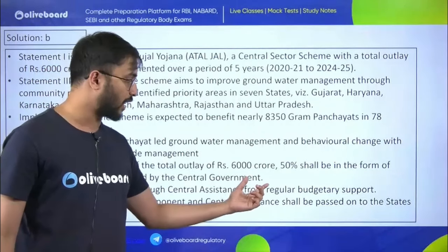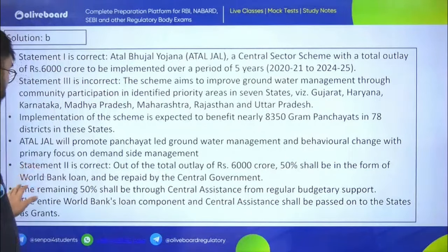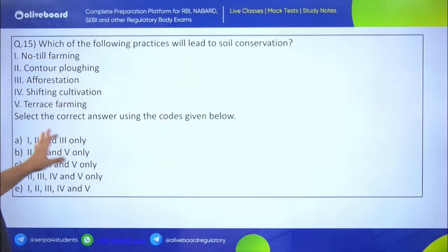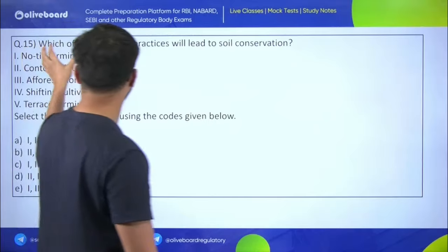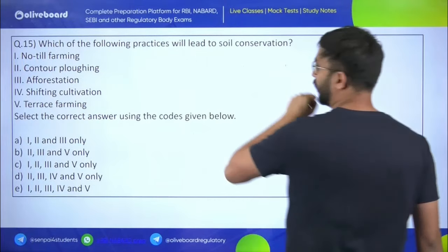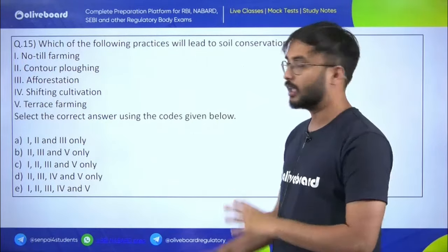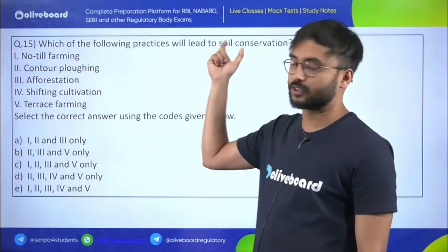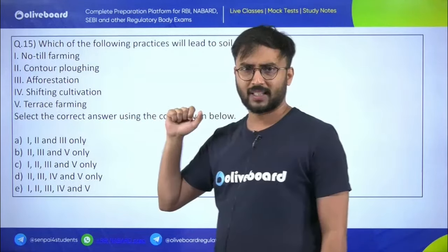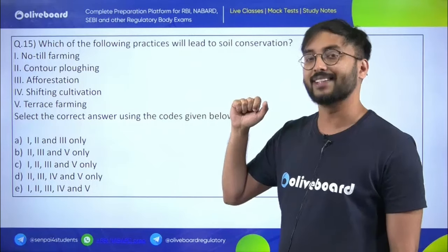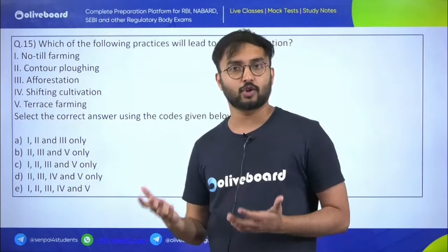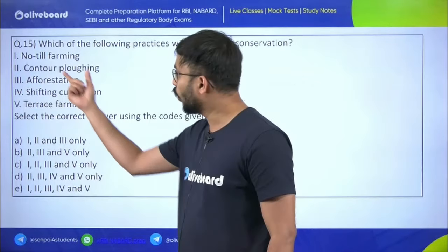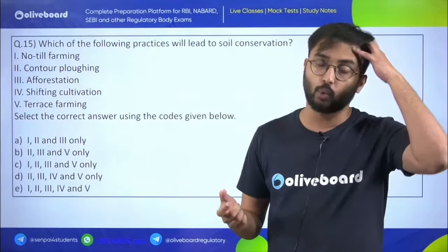Atal Bhujal Yojana statements: central sector scheme with total outlay of Rs. 6,000 crores implemented over five years from 2021 to 2025; 50 percent of the total outlay shall be in the form of World Bank loan repaid by central government; implemented in 10 water-stressed states. The answer is B — statements one and two are correct. Statement three is wrong: the scheme targets seven states — Gujarat, Haryana, Karnataka, Madhya Pradesh, Maharashtra, Rajasthan, and Uttar Pradesh — not ten.